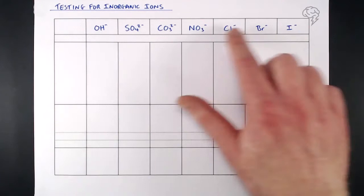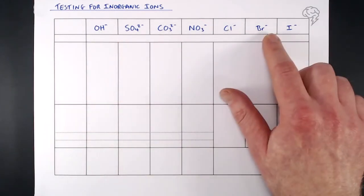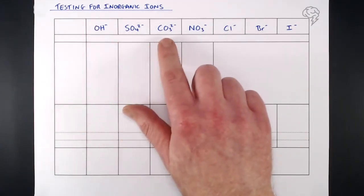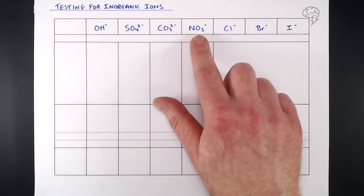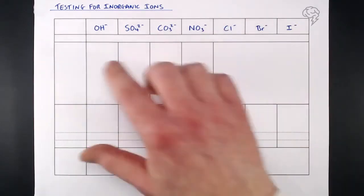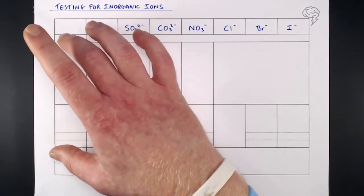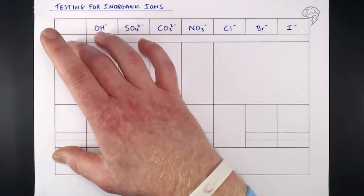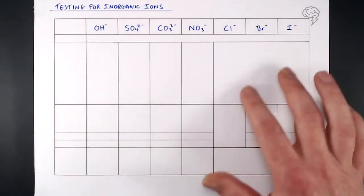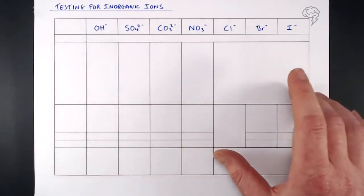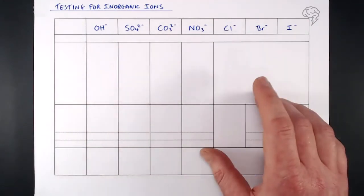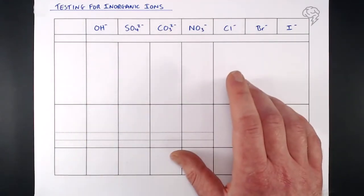Along the top are our anions: hydroxide, sulfate, carbonate, nitrate, and our halide ions. On the left-hand side I'm going to look at the common cations — our positive ions — and cross-reference these to see whether we get precipitates or whether they're soluble or insoluble.